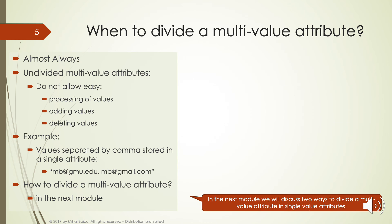Let us consider an example: the email address of a person. If a person has two or more email addresses, we would store them separated by a comma as a single text value. If you want to send an email to each address, you need to extract each email by searching for the comma. Even more complicated is deleting an email, because we need to identify the comma before it, if any, the comma after it, if any, and handle which comma to include.